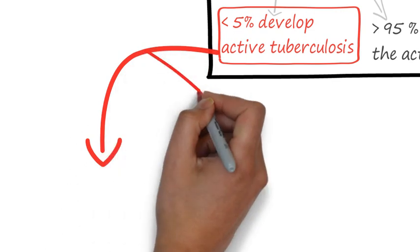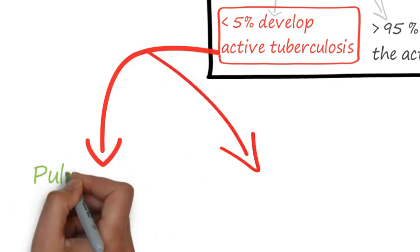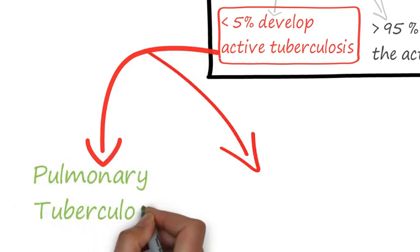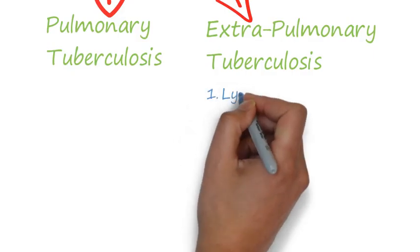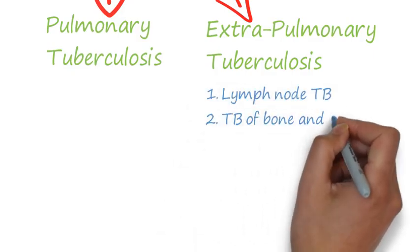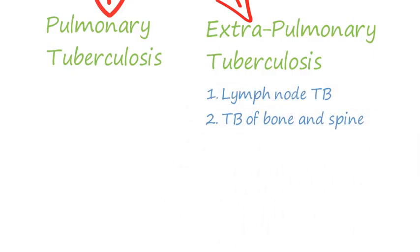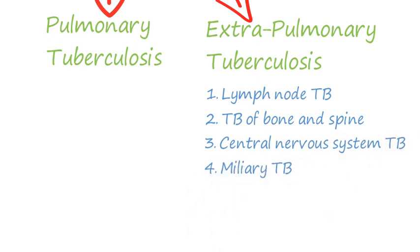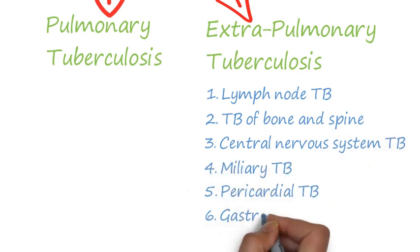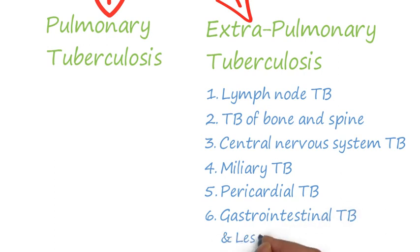Pulmonary tuberculosis is the most common type of tuberculosis, but there are several other types as well, such as lymph node tuberculosis, tuberculosis of bone and spine, central nervous system tuberculosis, miliary tuberculosis, pericardial tuberculosis, gastrointestinal tuberculosis, and more. They are all classified as extra-pulmonary tuberculosis.